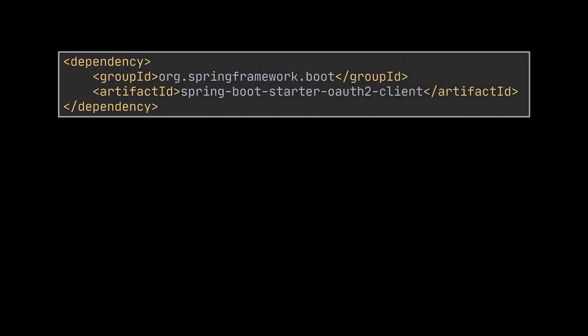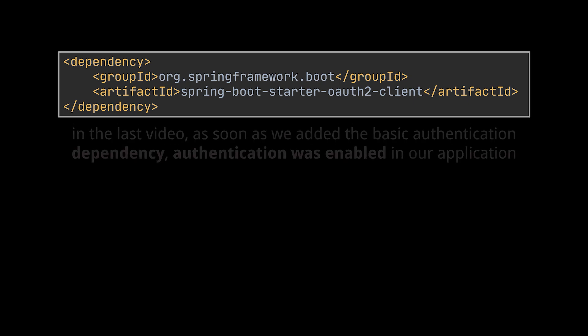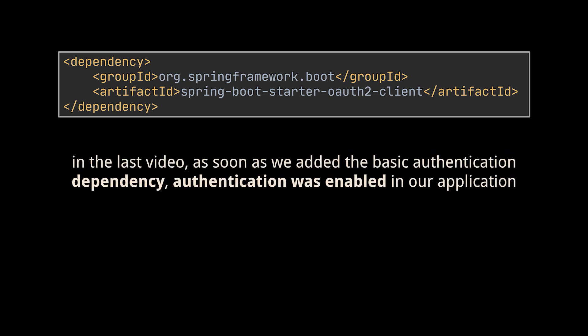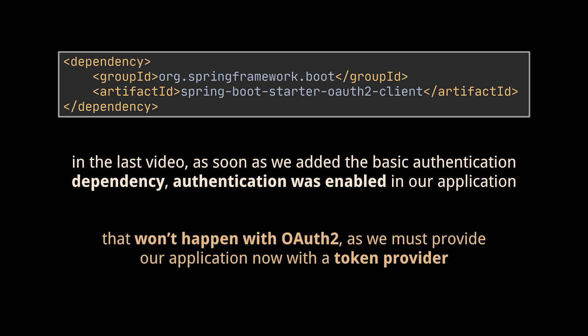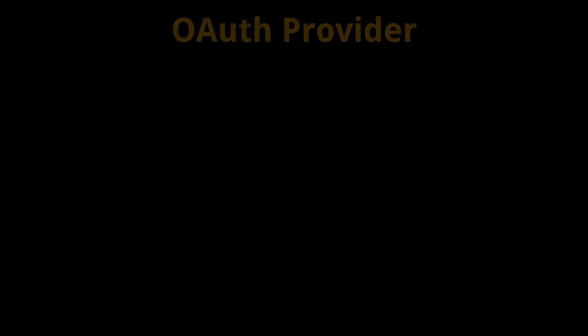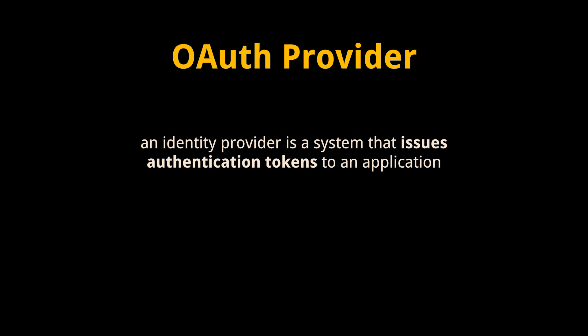Now that we know the difference between the two, let's delve into OAuth2 and start by adding the Maven dependencies to our Spring Boot project. In the last video, as soon as we added the basic authentication dependency, a username and password were generated for us and authentication was enabled. That won't happen with OAuth2 — we can't benefit from it out of the box, as we must now provide our application with a provider.